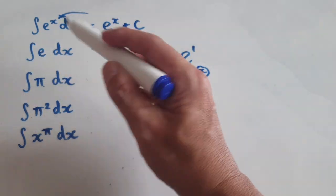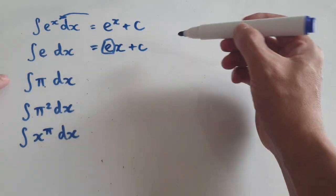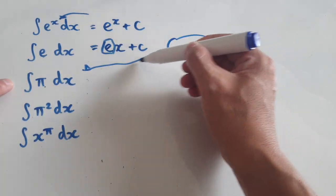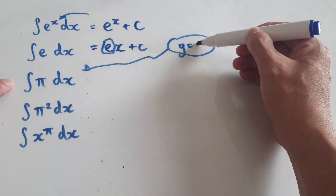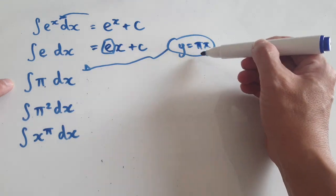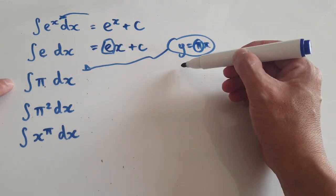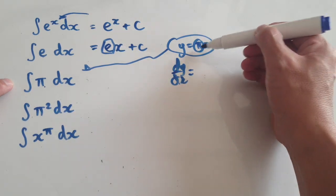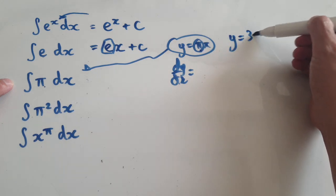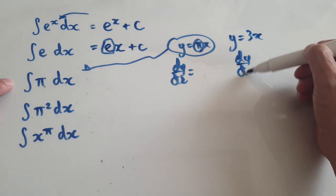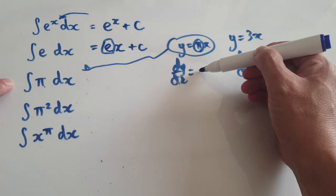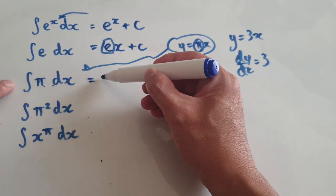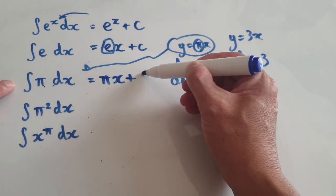Now how would you integrate pi? You're looking for something such that when you differentiate it, it gives you pi. If you consider y equals pi x, when you differentiate this, pi is just a constant — a number that doesn't change. So dy by dx equals pi, just like differentiating 3x gives 3. So when you integrate pi, the answer will be pi x plus c.